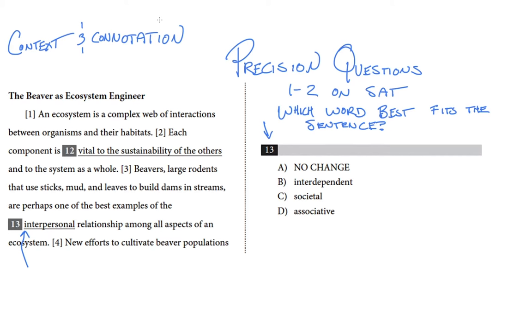Let's read up to the end of line three of The Beaver as Ecosystems Engineer. An ecosystem is a complex web of interactions between organisms and their habitats. Each component is vital to the sustainability of the others and to the system as a whole. Beavers, large rodents that use sticks, mud, and leaves to build dams in streams, are perhaps one of the best examples of the, here's the word, interpersonal, is what it says now, of the interpersonal relationship among all aspects of an ecosystem. So instead of thinking about interpersonal, let's just imagine there's a blank there.